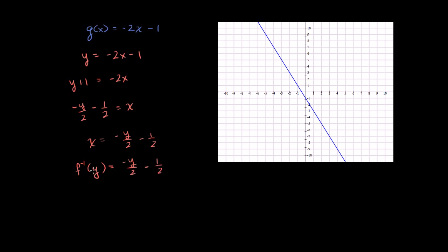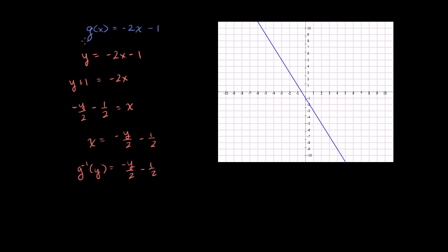Or we could write that x is equal to negative y over 2 minus 1 half. Or we could write f inverse as a function of y — oh, let me be careful here, that shouldn't be an f. The original function was g, so let me be clear: that is g inverse of y. g inverse of y is equal to negative y over 2 minus 1 half. This started with g of x, not f of x — make sure we get our notation right. Or we could just rename y and say g inverse of x is equal to negative x over 2 minus 1 half.